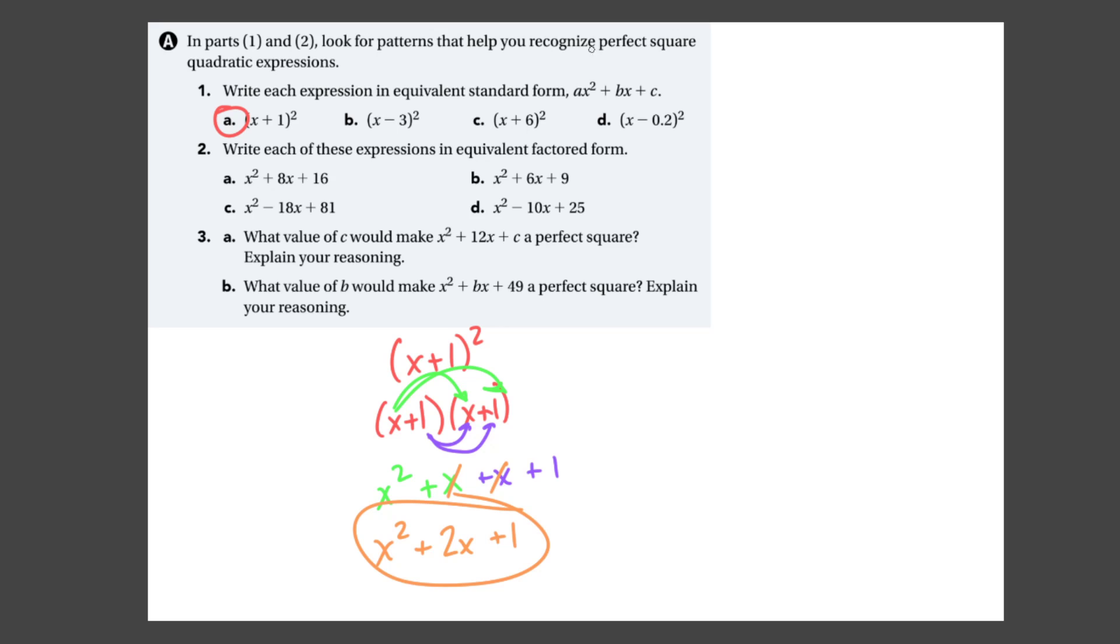I can combine like terms. These two have the same variable to the same power, so I can combine those. My final answer is x² + 2x + 1. And now it's in form ax² + bx + c. That's all you're doing for the first ones. I want you to notice that there is going to be a pattern between this value and this value as we kind of go through this. That is how you solve all four of those.